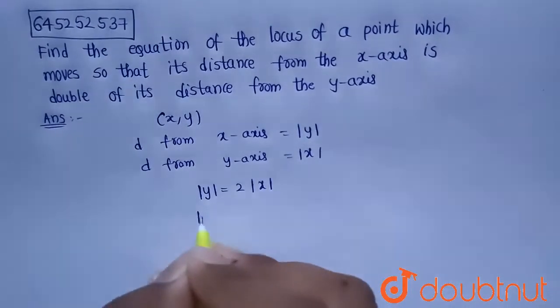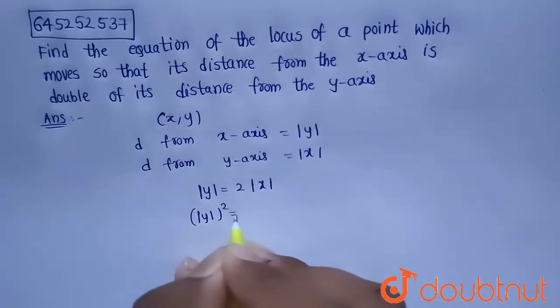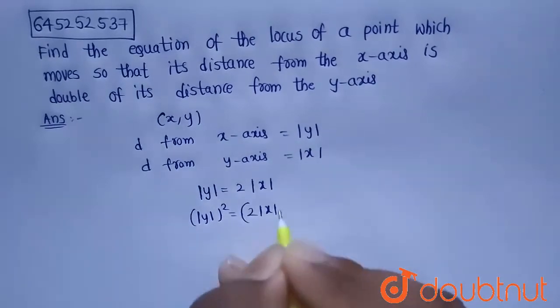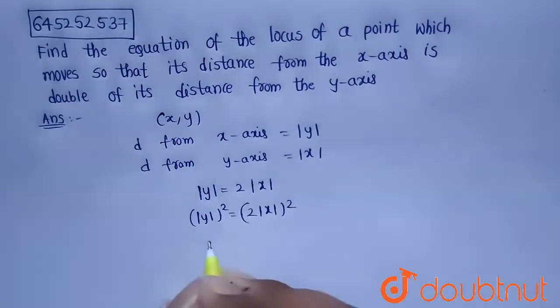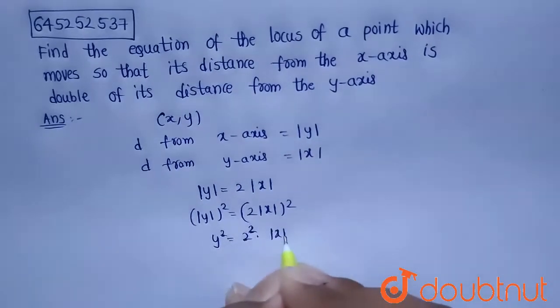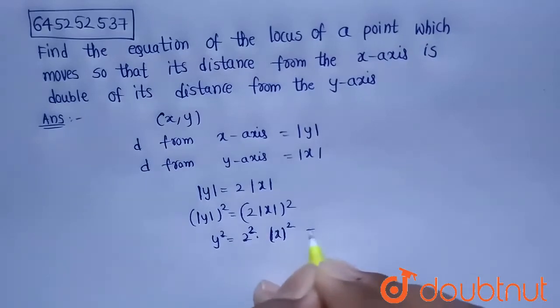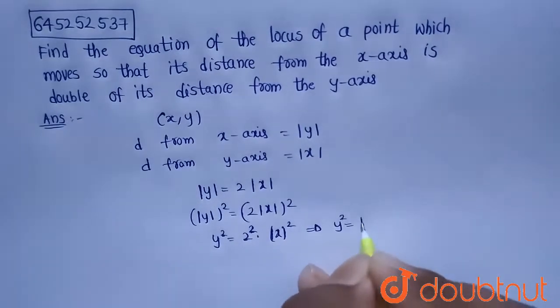I am applying squaring on both sides. So |y|² equals (2|x|)². From this, |y|² will be y² and 2² is 4, and |x|² is x². So from this, y² equals 4x².